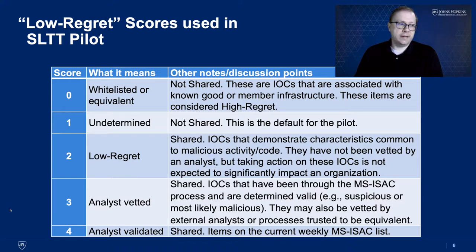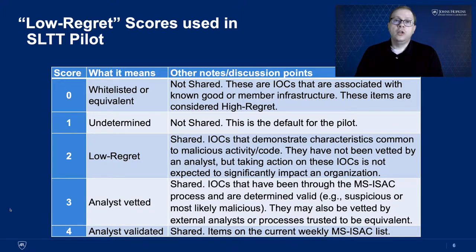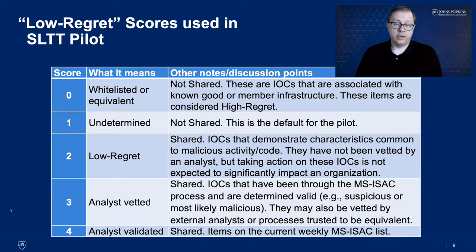What are the types of checks? They're not super complicated. We've basically used a 0-to-4 scoring scale. The first one is if something's on an allow list or a whitelist, don't share it. A score of 0 means we have a list of domains and IP addresses that we know our community is using for their operations — don't share that if it shows up on an alert, at least not in an automated feed. Additionally, if we can't determine the score for the indicator and it doesn't have a signature that matches, that's going to get a score of 1, and again that is not shared.